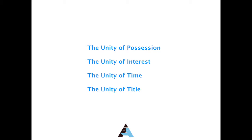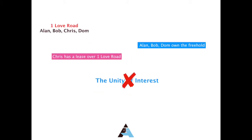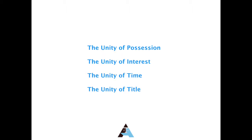The unity of possession means that each tenant has an equal right to possession of all of One Love Road, and the land is not split up into a separate part for each tenant. The unity of interest means that each tenant has the same interest in One Love Road and for the same length of time — so for example, if Chris had a lease over One Love Road and the others owned the freehold, there would be no unity of interest. The unity of time means that all tenants have their interest in One Love Road at the same time. The unity of title means that all tenants received their interest in One Love Road in the same document.